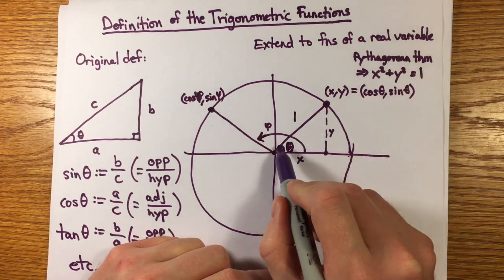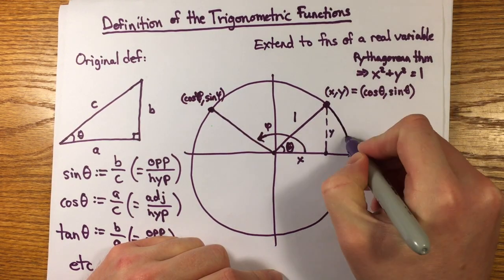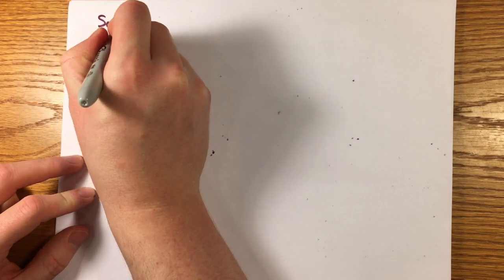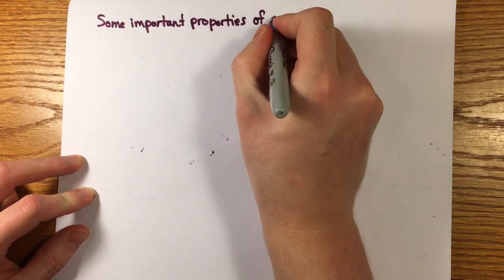The units of measure will be important when it comes time to compute derivatives. We'll find it most convenient to measure angle in terms of the length of the arc on the unit circle that it subtends, positive or negative, which is called radian measure.